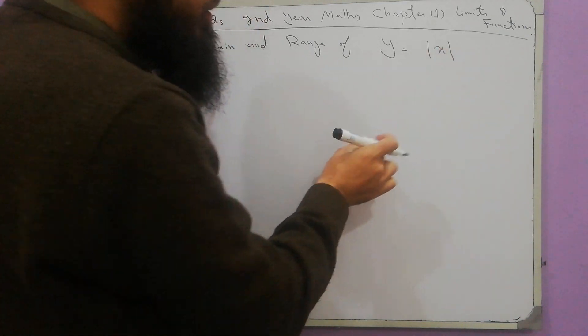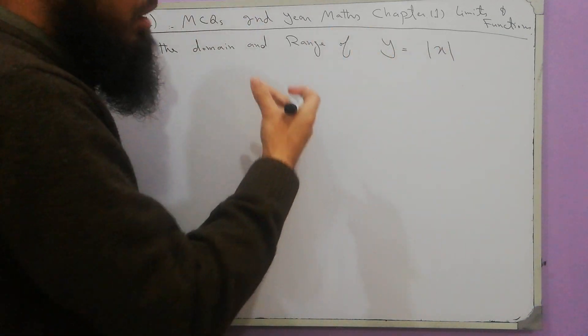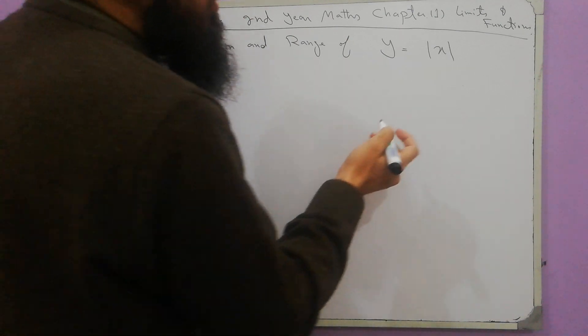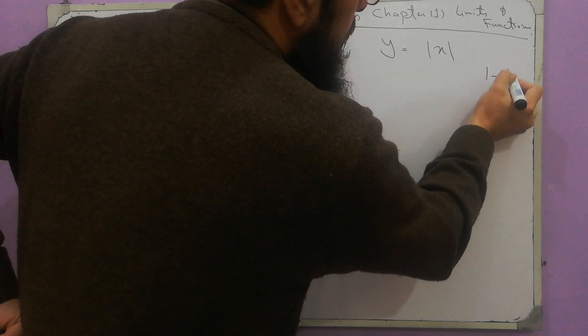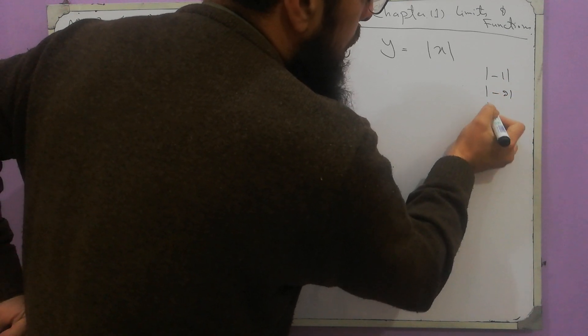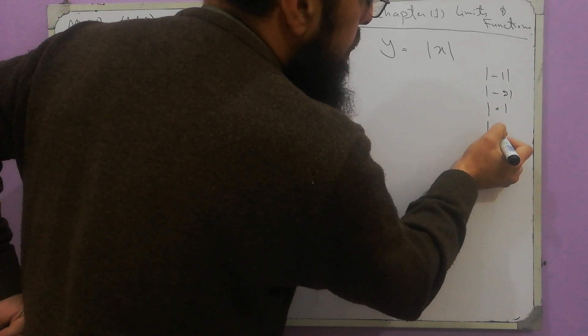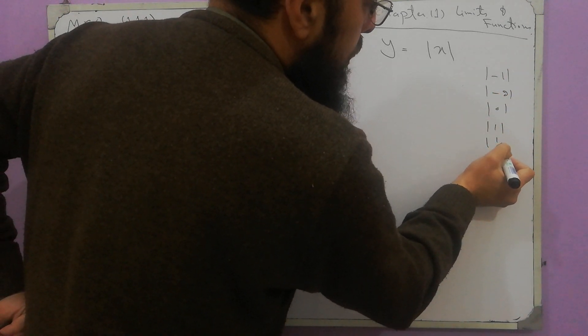Here I put negative values, all negative values, all positive values and zero including zero. I can put minus 1, I can put minus 2, I can put 0, I can put 1, I can put 1 by 2.